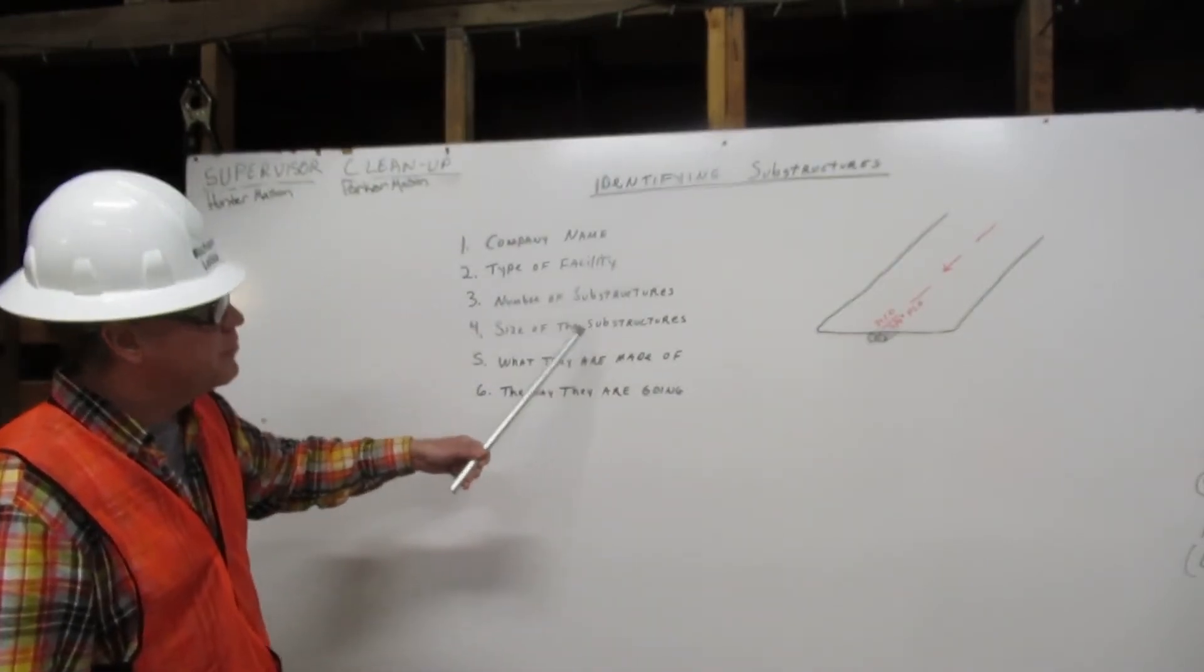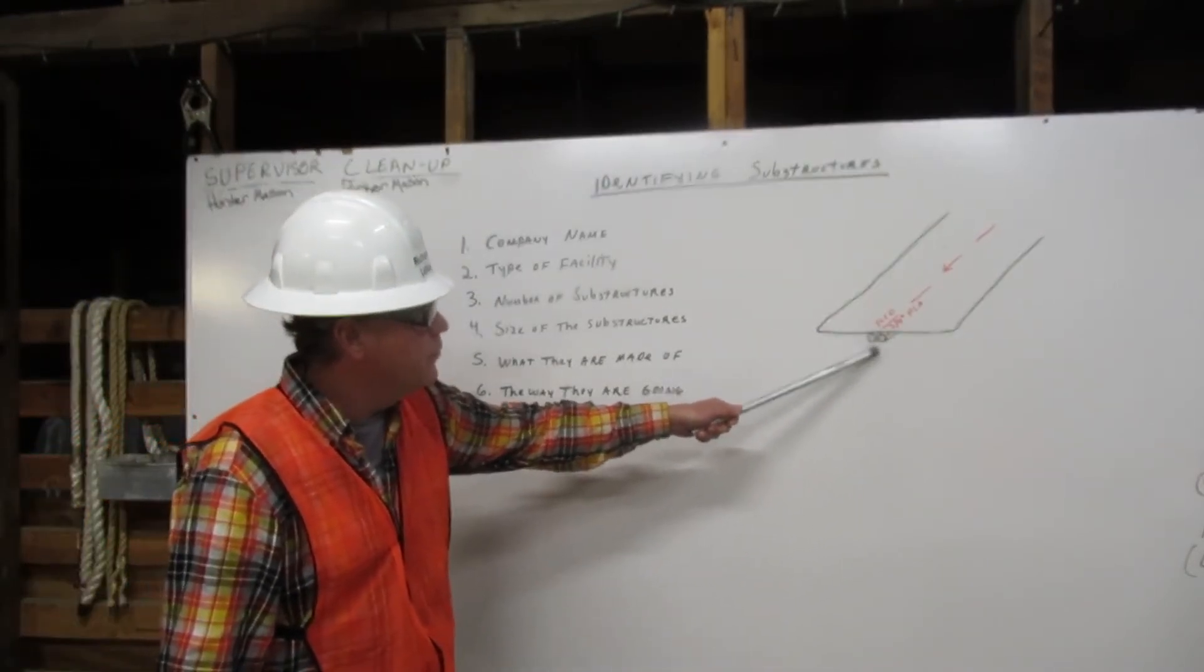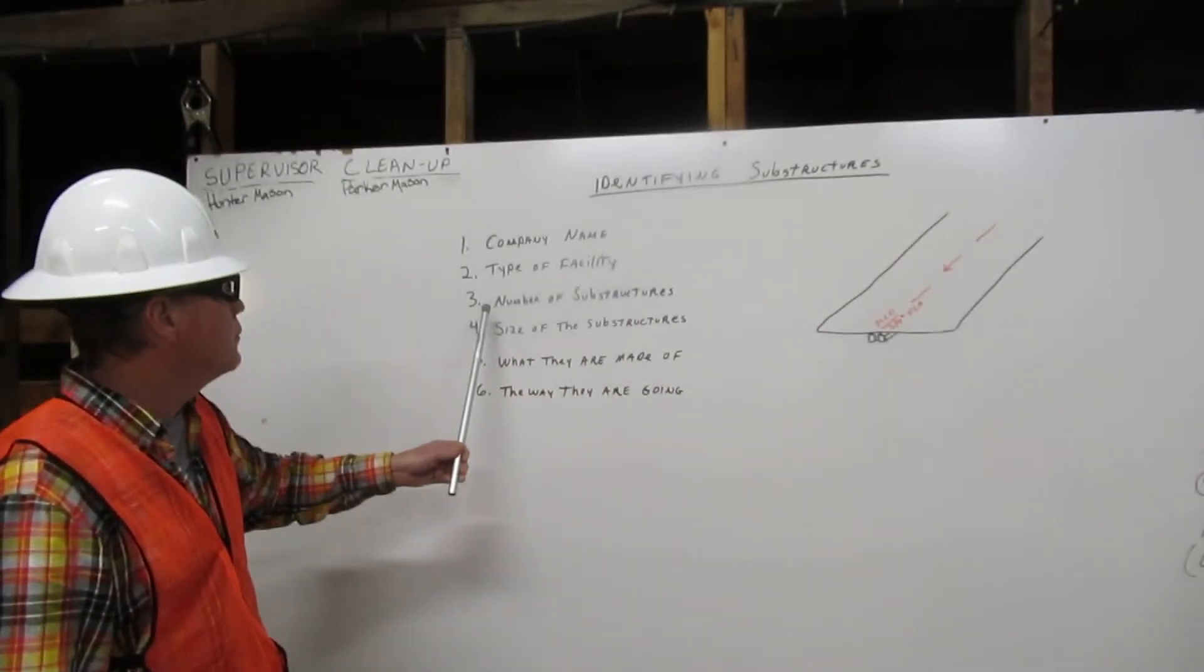Three, the number of substructures. We see two. So two would be your number of substructures.